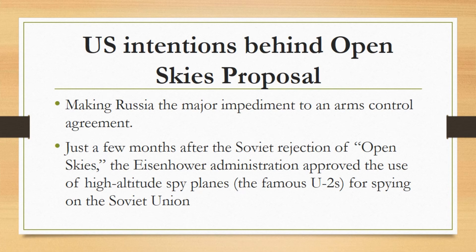The United States soon found that out anyway. Just a few months after the Soviet rejection of Open Skies, the Eisenhower administration approved the use of high-altitude spy planes — the famous U-2s — for spying on the Soviet Union. Thirty years later, President Reagan would use much the same rhetoric in his arms control dealings with the Soviet Union, declaring that arms control could only be effective if compliance with such agreements could be verified. 'Trust but verify' became Reagan's standard phrase.